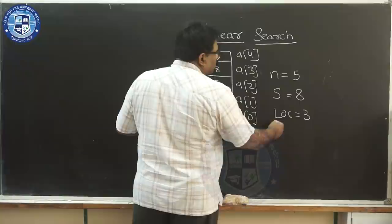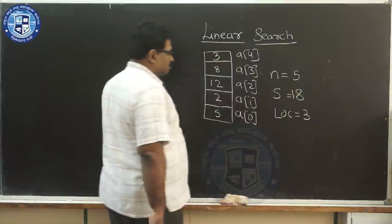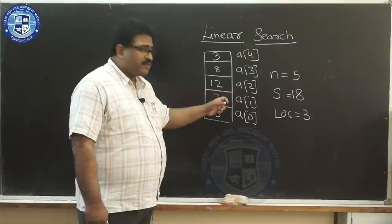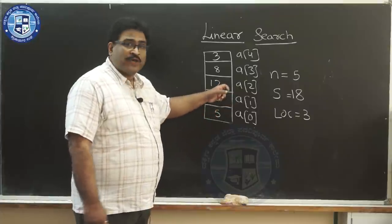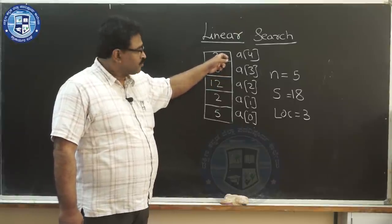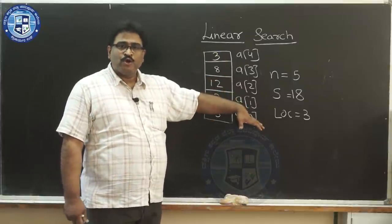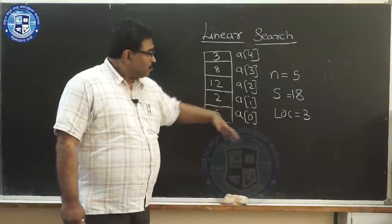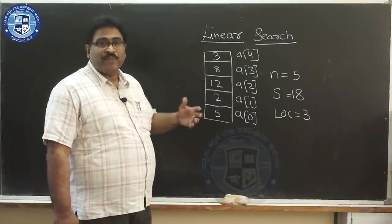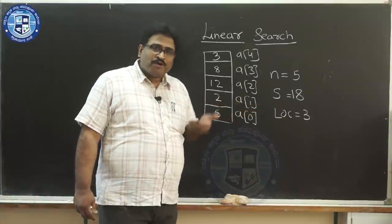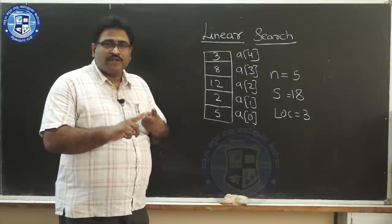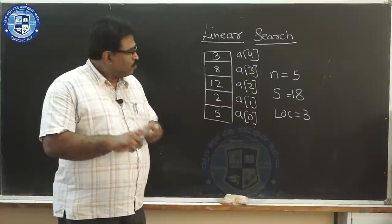Let me give one more example. If the value you're searching for is 18, you go to index 0 — it's 5, move on. Index 1 — it's 2, move on. Index 2 — it's 12, move on. Index 3 — it's 8, move on. Index 4 — it's 3. Did you find the element? No, it does not exist. So there are two possibilities when you come out: the element is found or the element is not found.